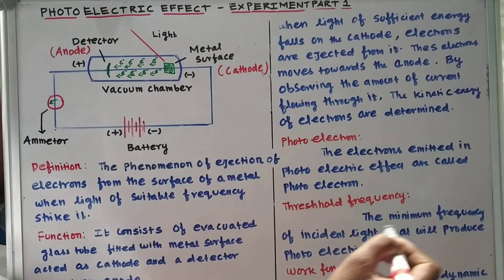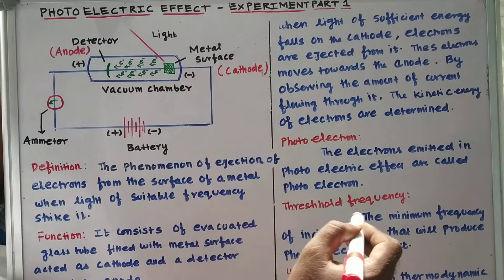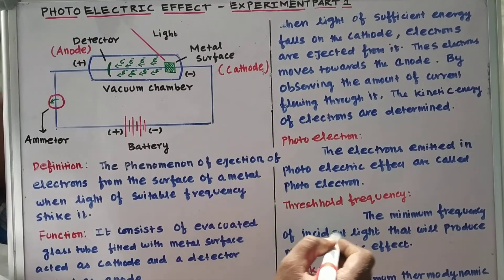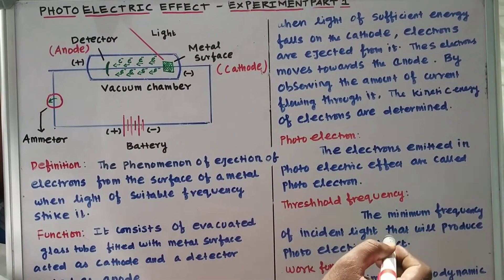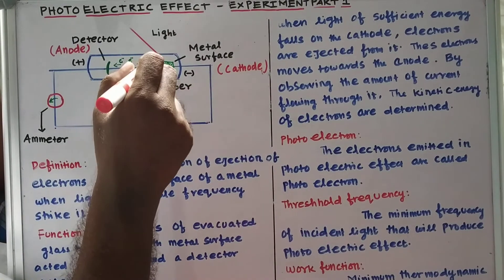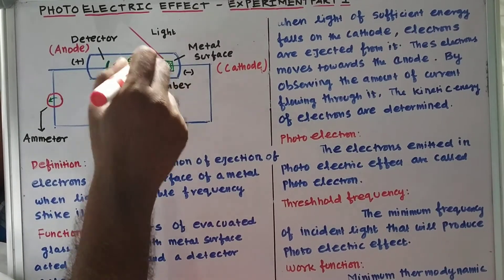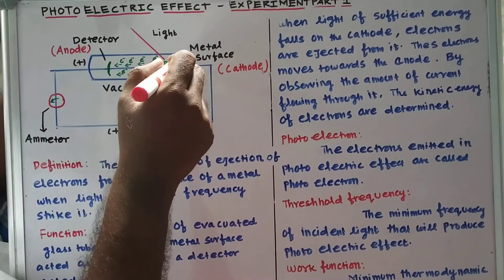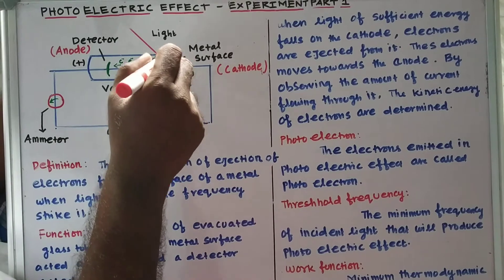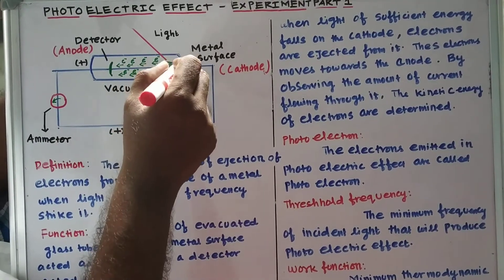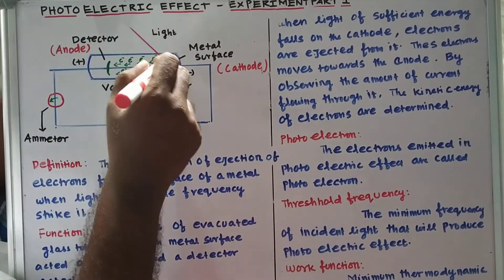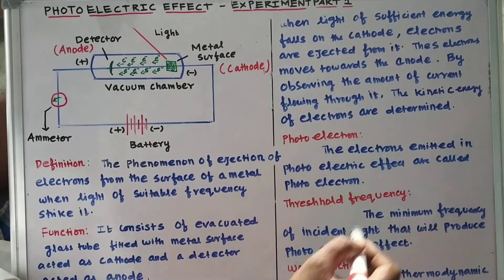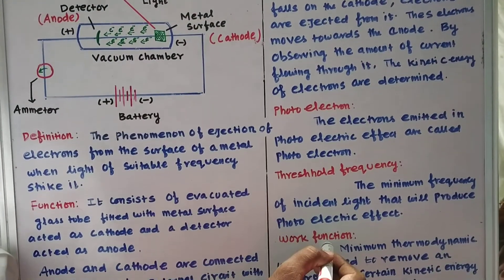Threshold frequency is the minimum frequency of incident light that will produce a photoelectric effect. Not all light produces a photoelectric effect — only light of suitable frequency can, and that suitable frequency is called the threshold frequency.